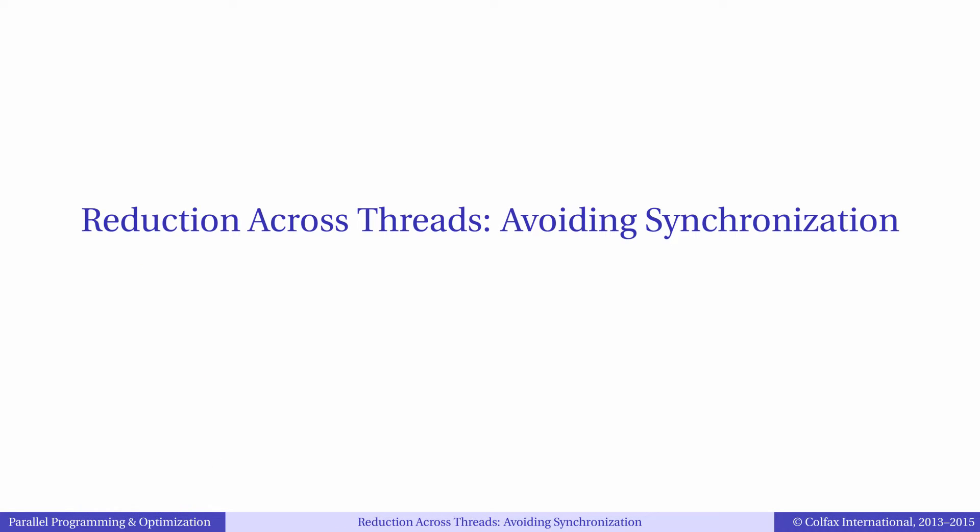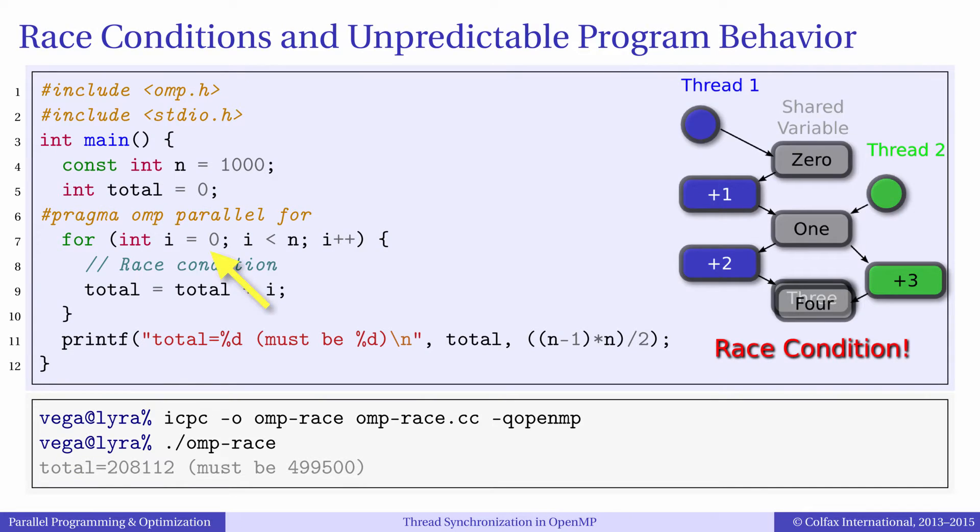In our example where we use a parallel loop to add together integers from 0 to n-1, the key operation is summation.